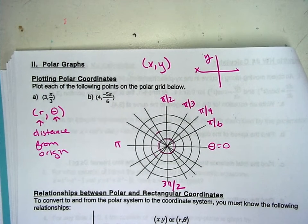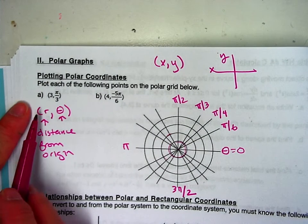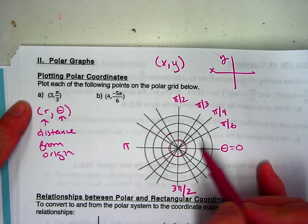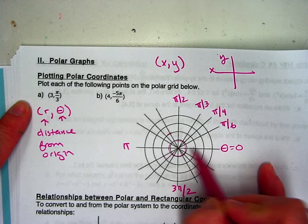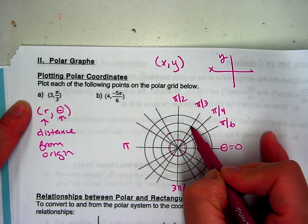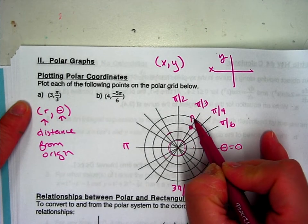So we plot an ordered pair, so 3, pi over 3, so I'm going to be 3 units out on the r, distance from 0, and then pi over 3 is right here, so this would be point A.